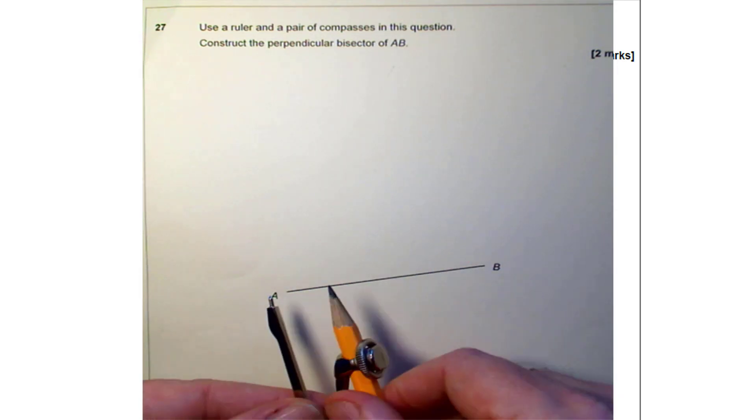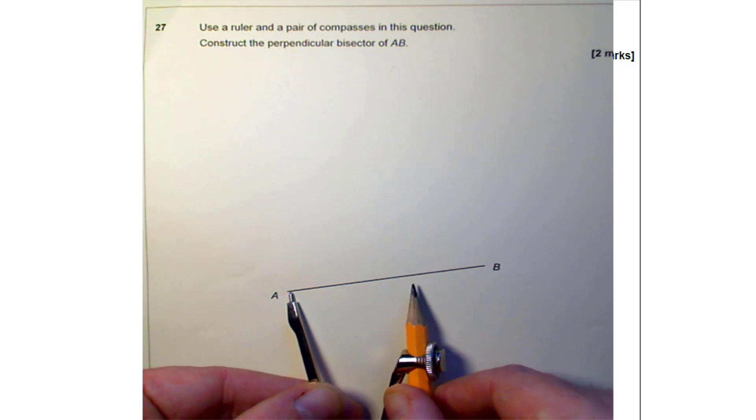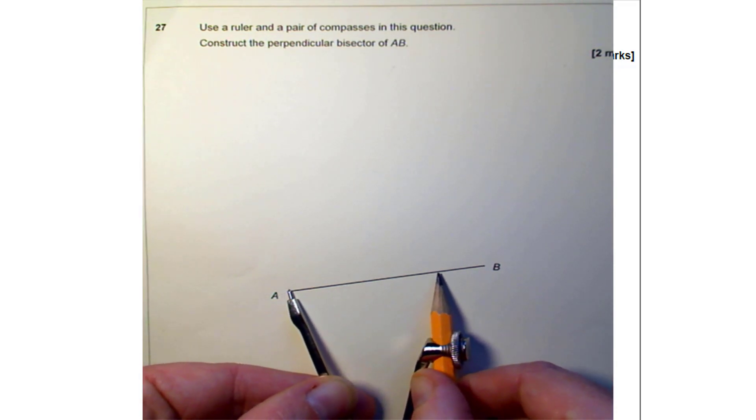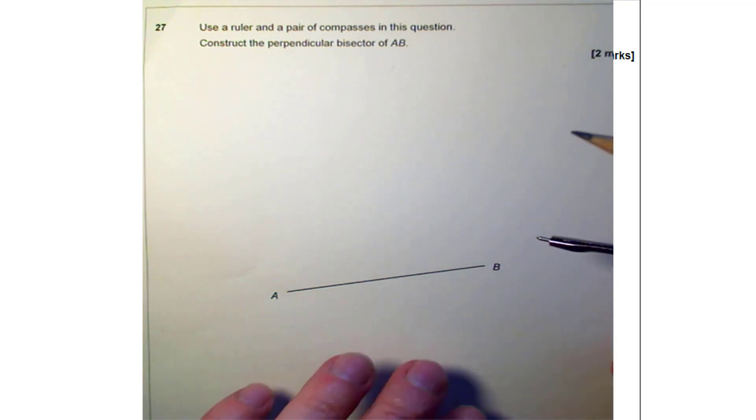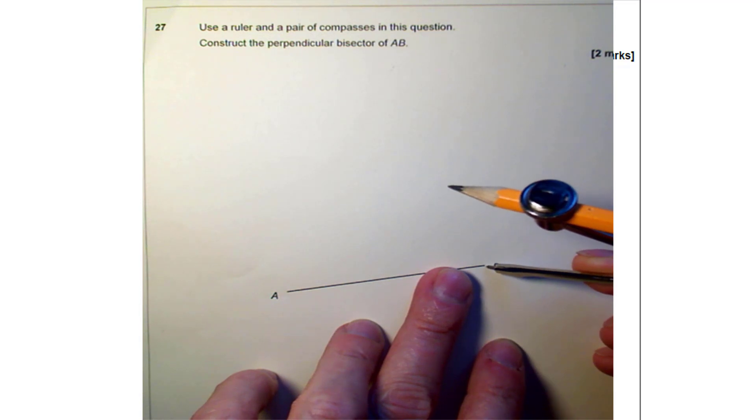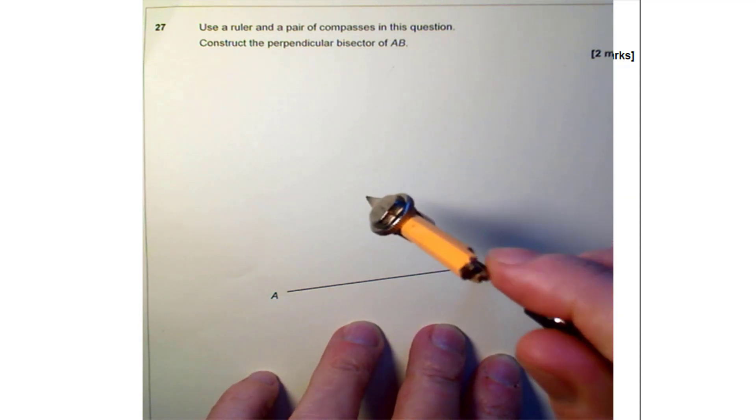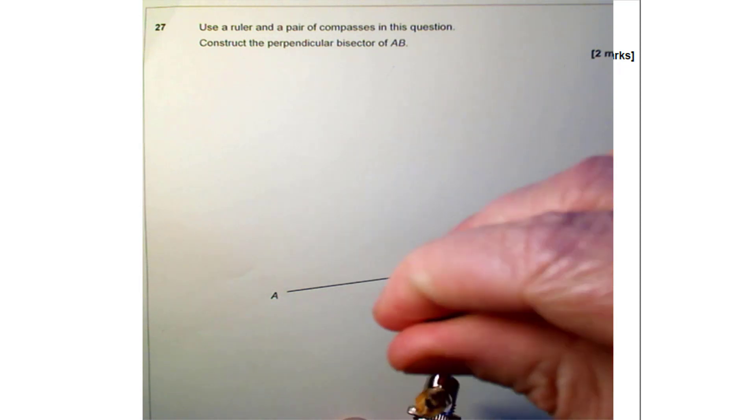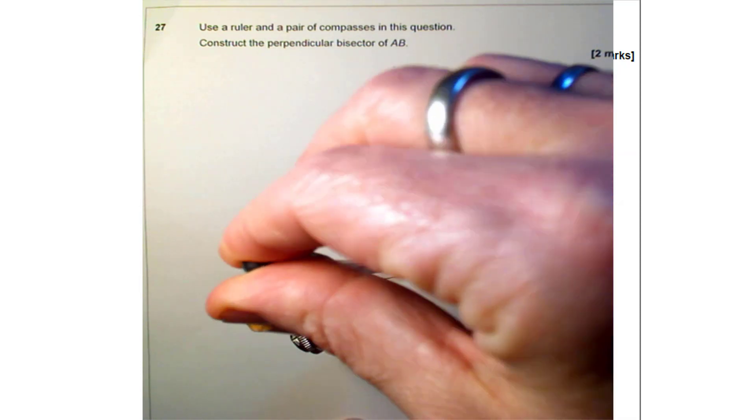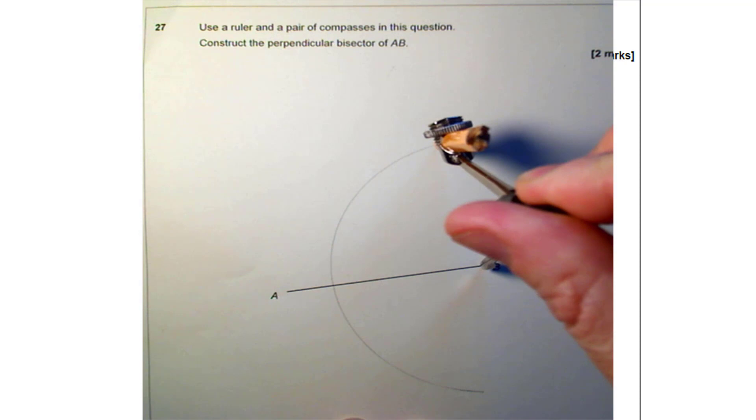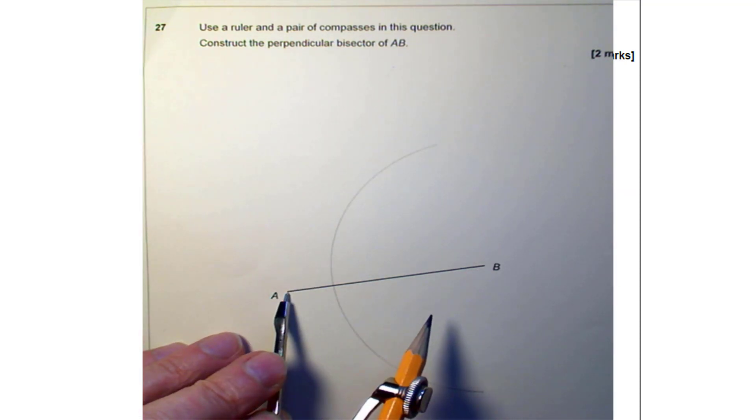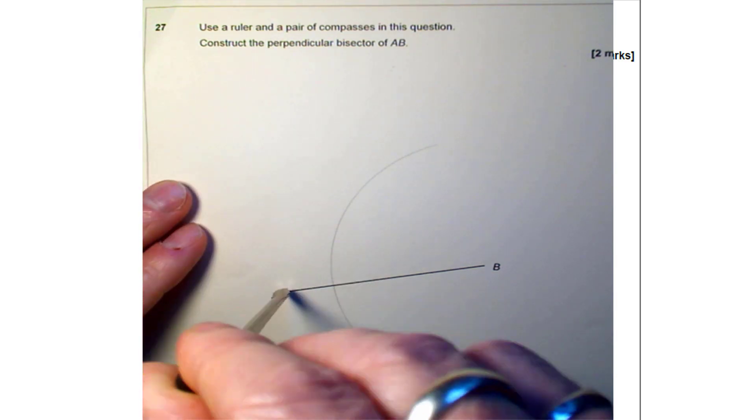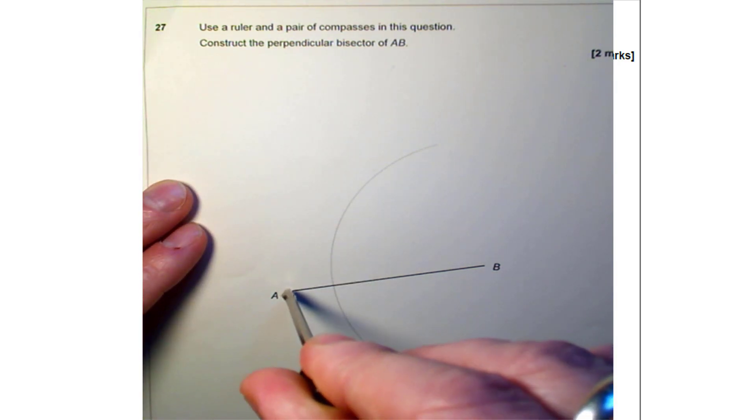What you need to do is to widen out the compass so it's more than half of the distance across the length that you want to bisect. Then put the steel compass pin in one of your points and draw an arc above and below the line. Then switch sides, put the steel pin part into the other end of your line and draw a second arc so it cuts the first one in two places.